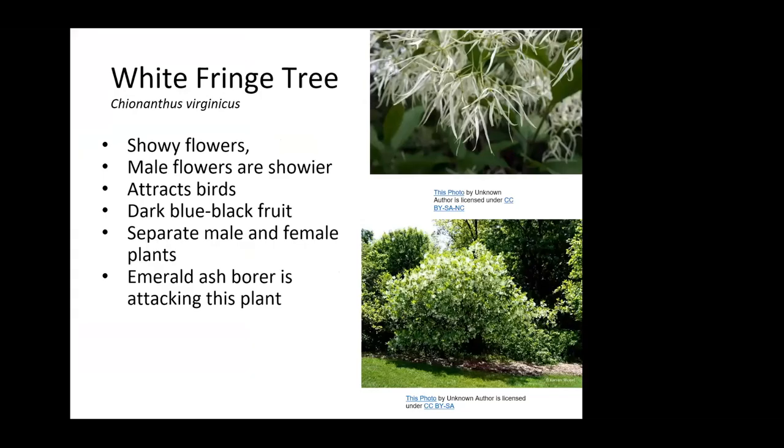White fringe tree — I have one of these and they are cool. They are separate male and female, so to have berries you need both. The problem with this one is it will be attacked by the emerald ash borer, so right now I can't recommend planting it because you would have to protect it from the emerald ash borer to keep it alive.